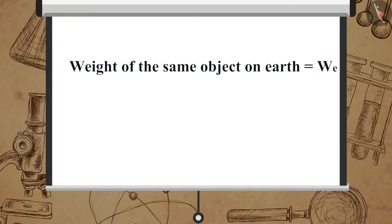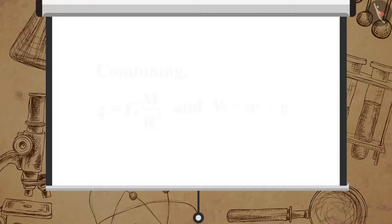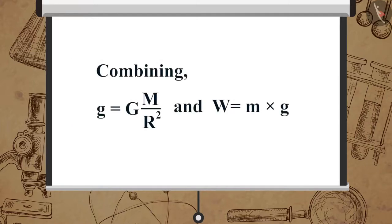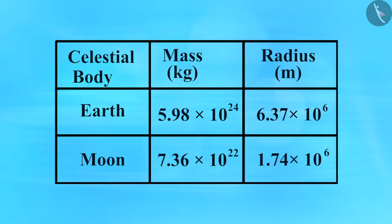Let the weight of the same object on earth be We. Let the mass of the earth be M and its radius be R. Combining the equations g = G × M / R² and W = m × g, we get: We = G × M × m / R². Have a look at the table which gives us some information about the earth and the moon.